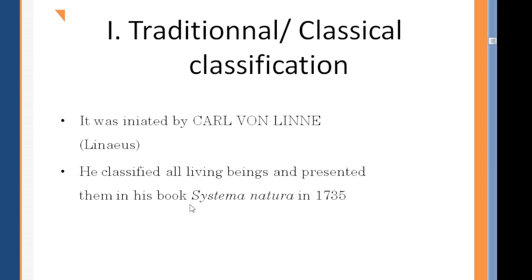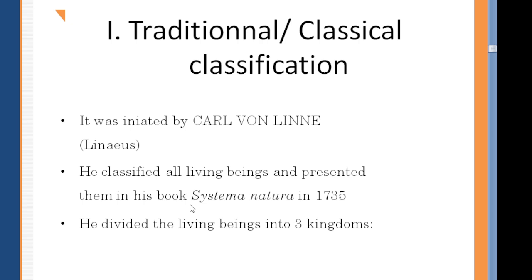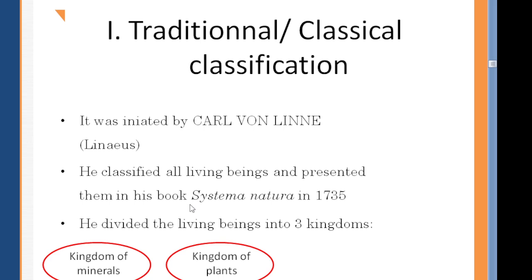Carl von Linné classified all living beings and presented them in an important book called Systema Naturae in 1735. This work divided the living beings into three kingdoms: the kingdom of minerals, the kingdom of plants, and the kingdom of animals.